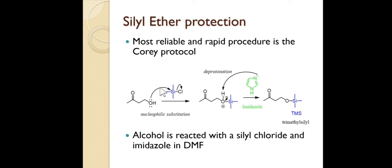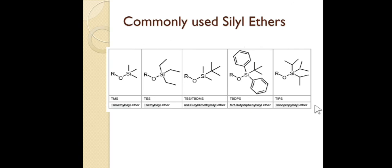The mechanism is again similar: the oxygen lone pair attacks on silicon, chlorine leaves, and we get the protonated intermediate. Imidazole then abstracts the proton and we get the final silylated, silyl-protected alcohol. This is the most commonly used procedure for silyl protection and it is called the Corey protocol.